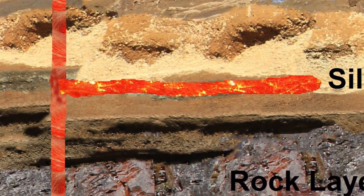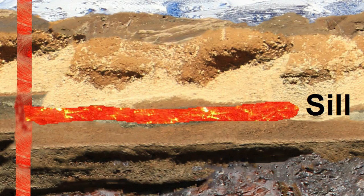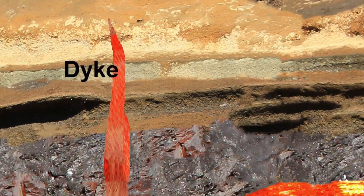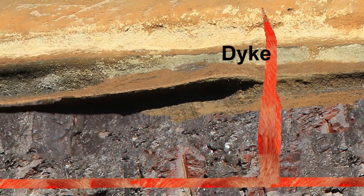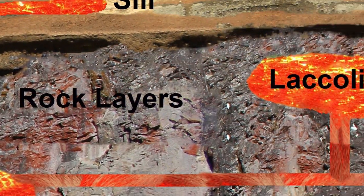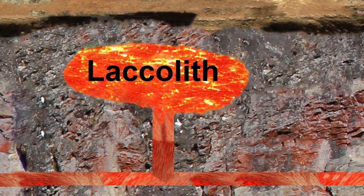The magma may stay underground in horizontal layers called sills. It may cut through adjacent rock layers to form dykes. The magma may also stay underground in reservoirs called laccoliths.